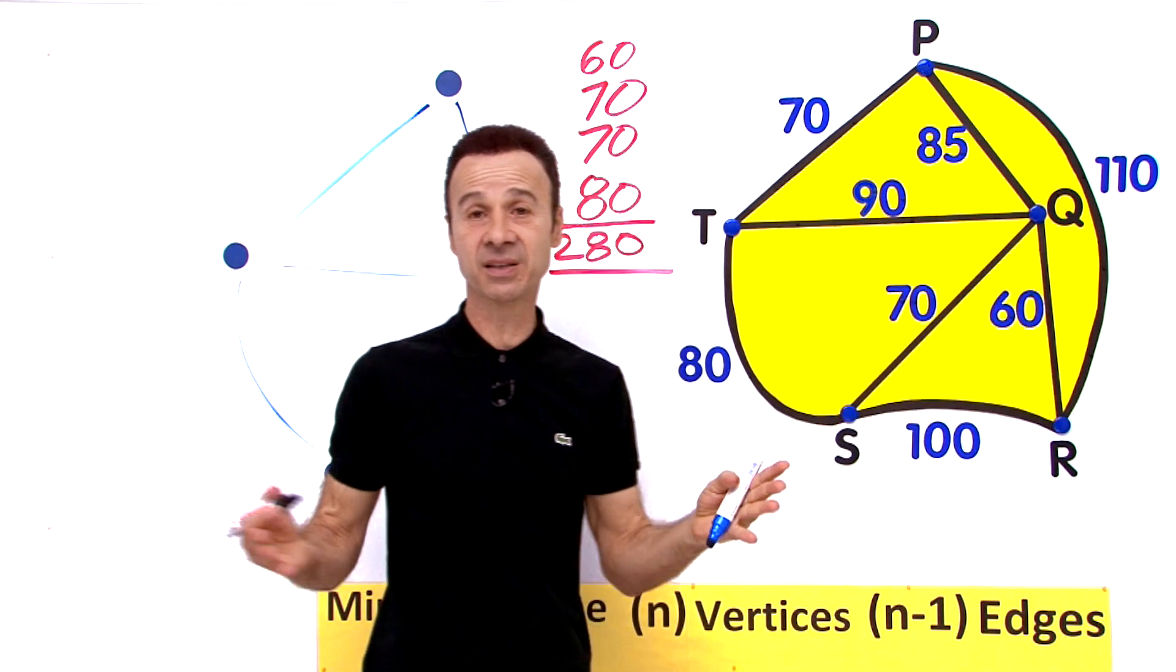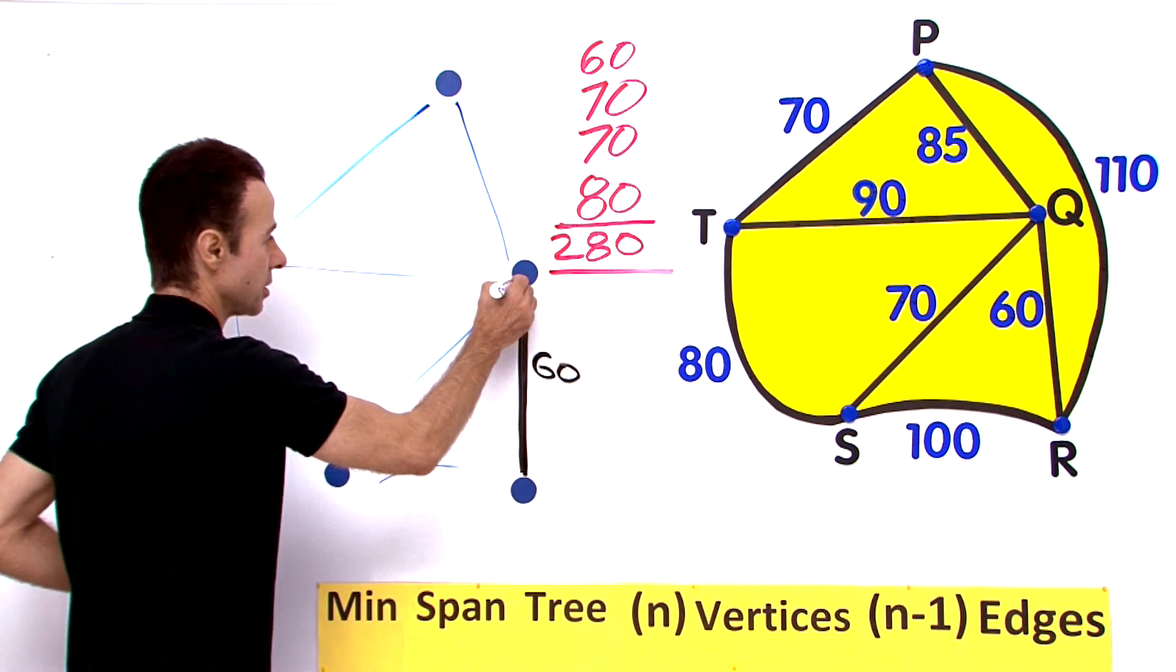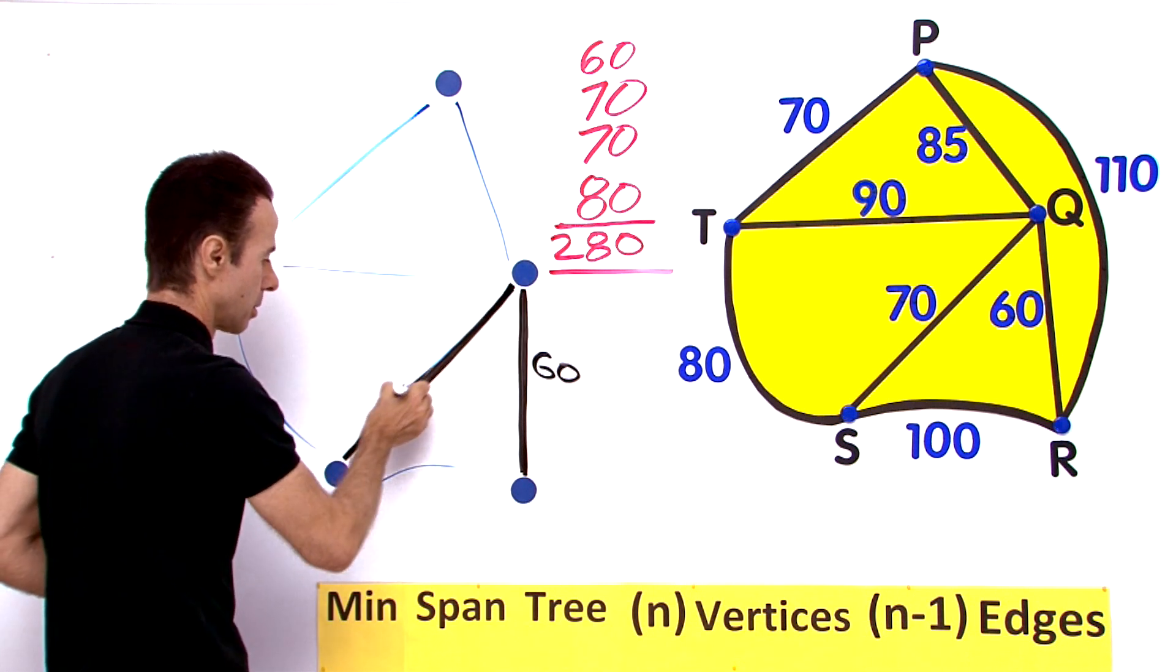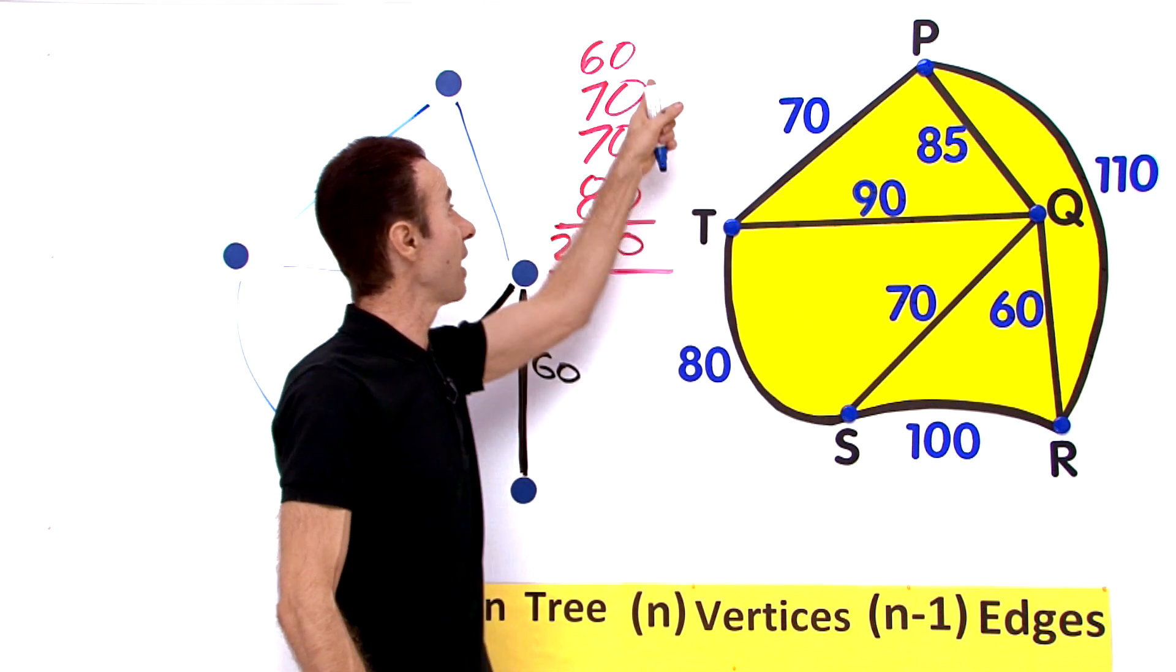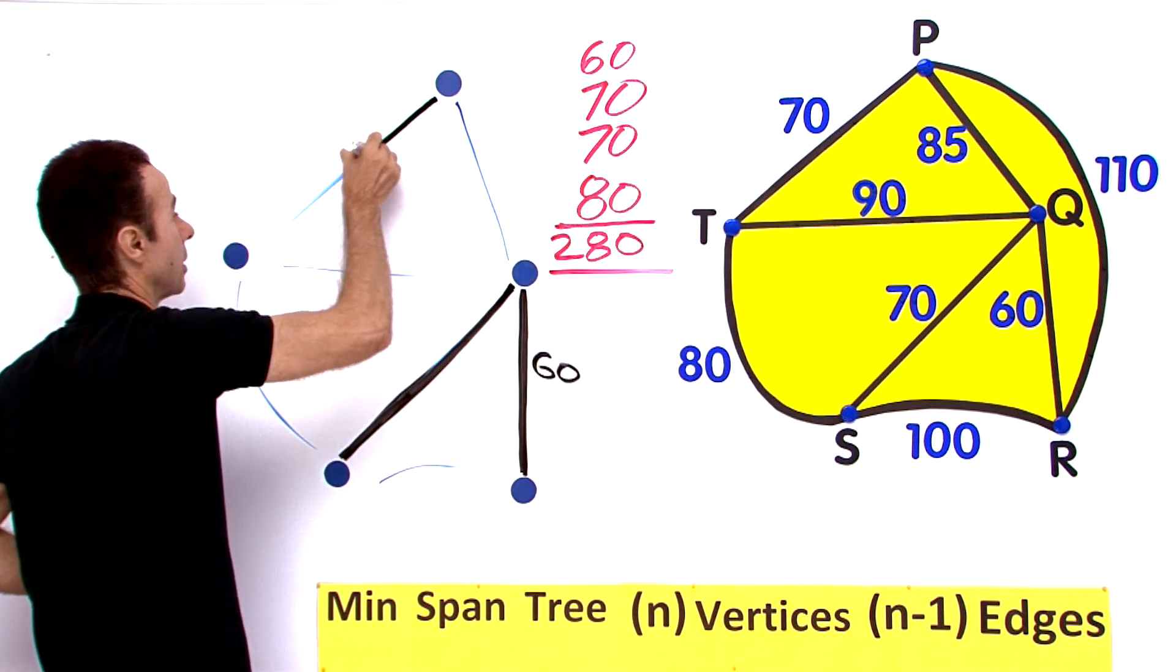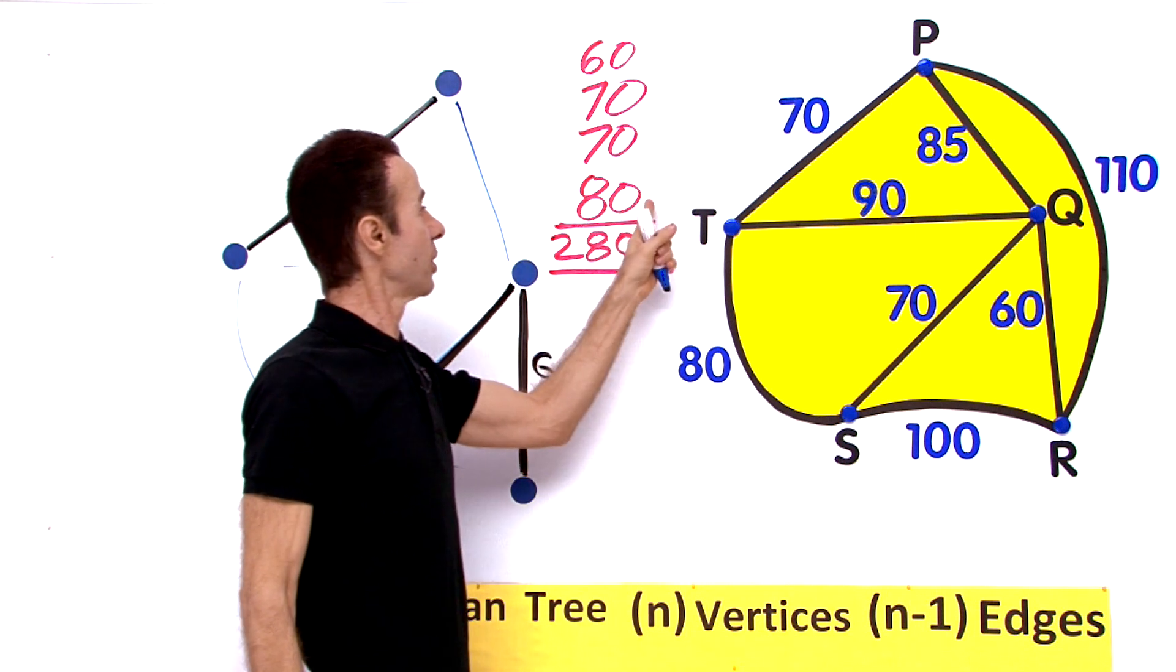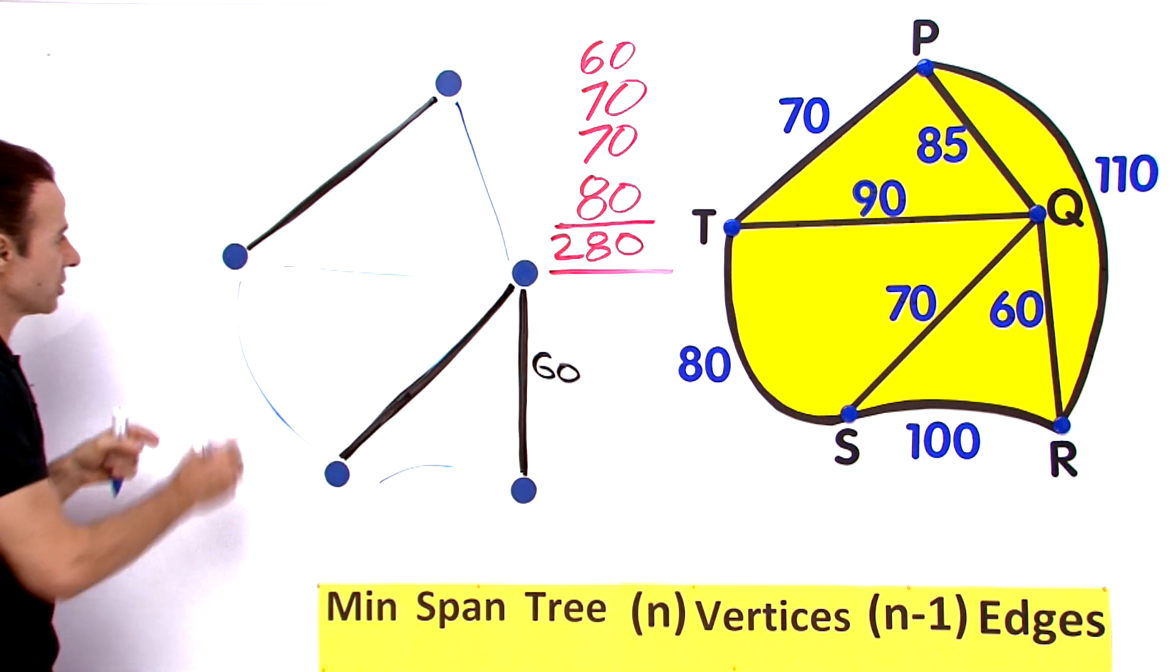Notice we do not have another 70 here, otherwise that will form a cycle and you cannot have a cycle in a minimum spanning tree. So let us put the 70 in, so I will just connect that. There is our 70. We also have another 70, there it is right there. So let me connect that. There is that 70, that is connected. The next one is 80, that is a curve around here. There is our 80.